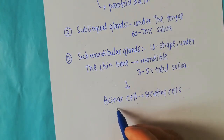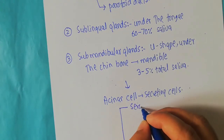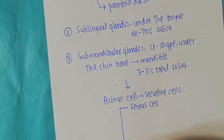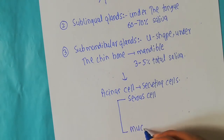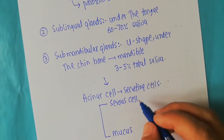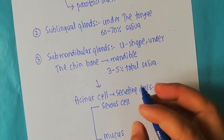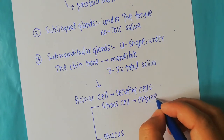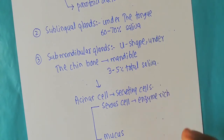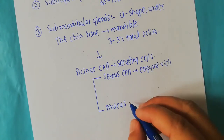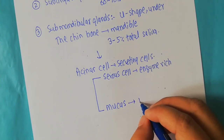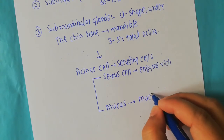The first type of acinar cells is the serous cells, and the second type is the mucus cells. The serous cells secrete enzyme-rich fluids, while the mucus cells release a component of saliva known as mucins.